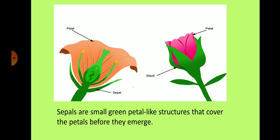Children, have you seen small green petal-like structures that cover the petals before they emerge? Yes, they are called sepals. Look here at the picture of the Hibiscus sepal.